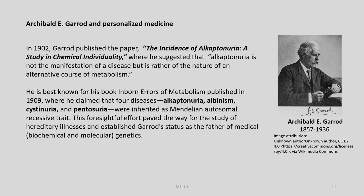In 1902, Archibald E. Garrod published the paper 'The Incidence of Alkaptonuria: A Study in Chemical Individuality,' where he suggested that Alkaptonuria is not the manifestation of a disease but is rather of the nature of an alternative course of metabolism. He is best known for his book 'Inborn Errors of Metabolism' published in 1909, where he claimed that four diseases — Alkaptonuria, Albinism, Cystinuria, and Pentosuria — were inherited as Mendelian autosomal recessive traits. This foresightful effort paved the way for the study of hereditary analysis and established Garrod's status as the father of medical, biochemical, and molecular genetics.